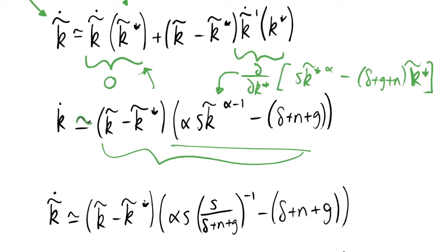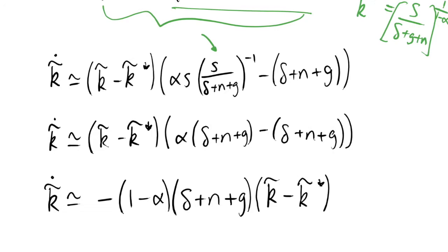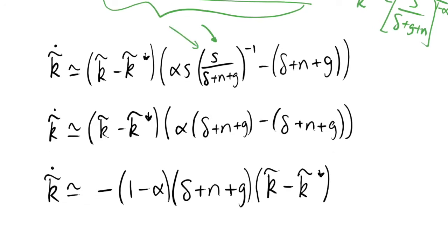Notice that we're using this curly equal sign because this is an approximation — this isn't an exact relationship, and we just need to make sure we remember that. So now we can substitute in for our k. We know that our k* is equal to s over... our k* is equal to something like this expression, and we can substitute it in. I've shown a few lines of working: we substitute that in, it's to the power of minus one so we can flip the fraction upside down, and then our s's cancel out quite nicely, and we get to this line of working.